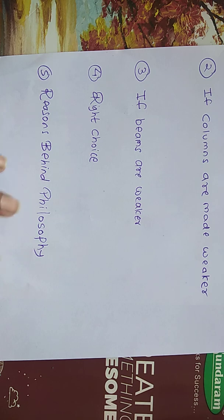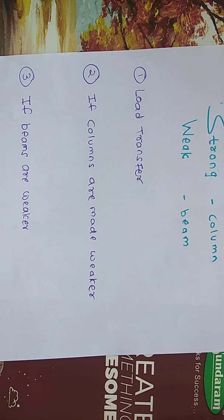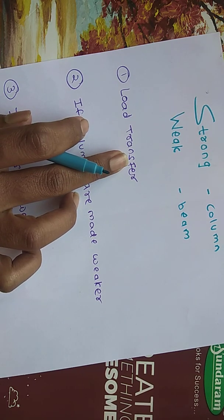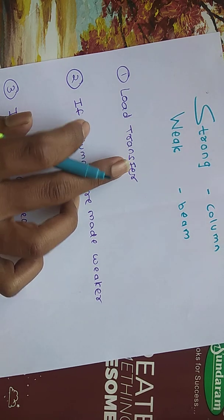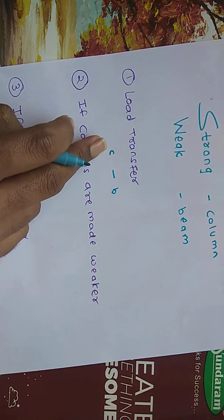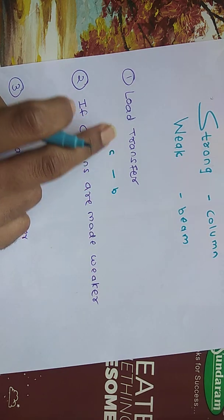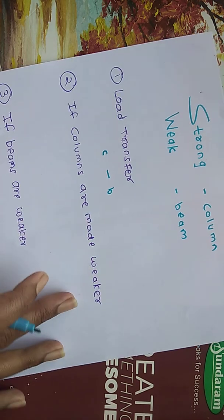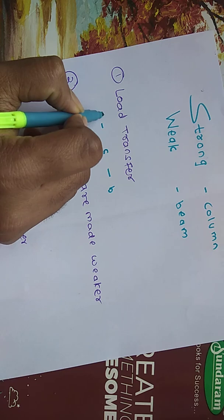For a building to remain safe during earthquake shaking, the column which receives the force from the beam has to be strong, and the foundation should be stronger than the column. This is the general load path.